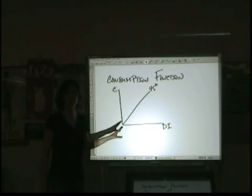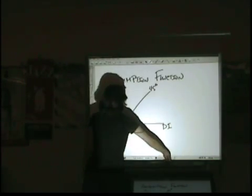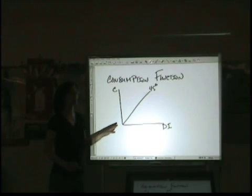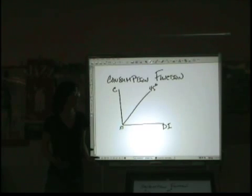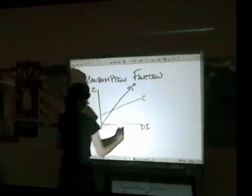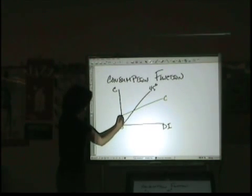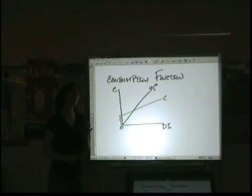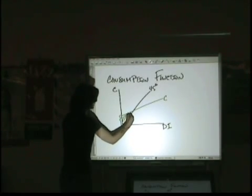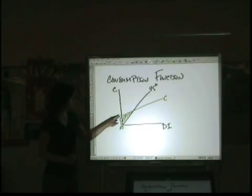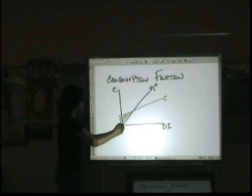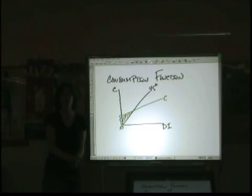Your 45-degree line is your reference line. When you put the consumption function on this graph, what happens is that even when disposable income is at zero, you're going to have some consumption — because even when you're not making any money, it still costs money to live. So you don't want to start your consumption function at the origin, because that's just not realistic. This distance represents the amount of money that you're spending when you have no income. This area, where consumption is greater than your 45-degree line, means that you are spending more than you have. The 45-degree line means a one-to-one relationship — you're spending each dollar that you make, breaking even all the time on that reference line.